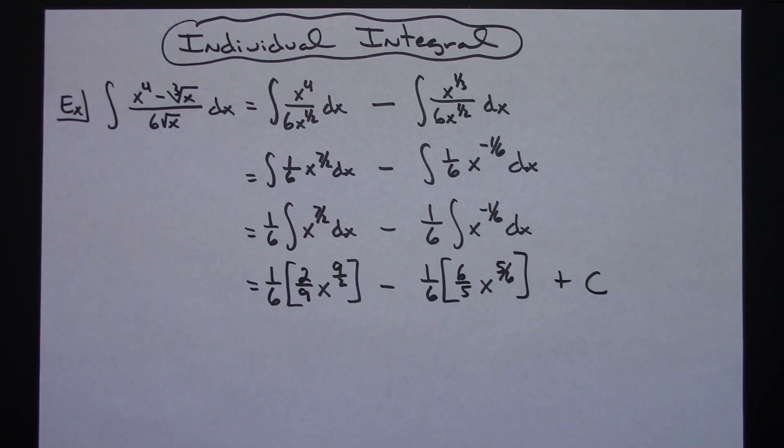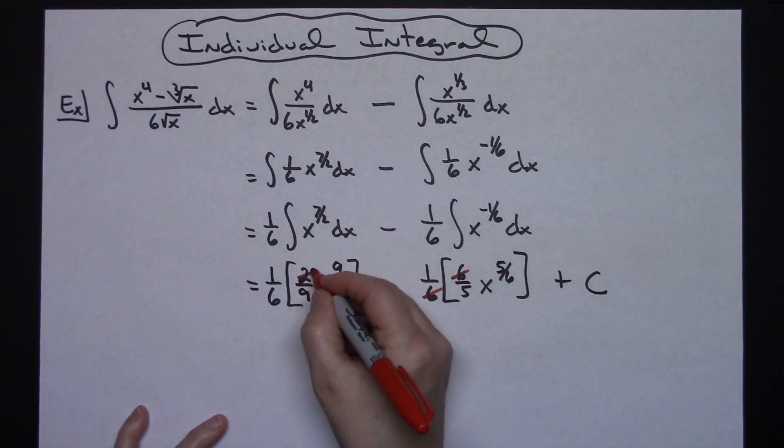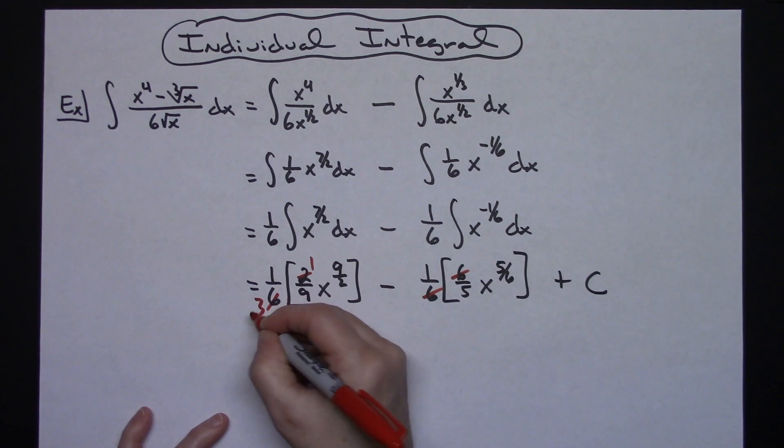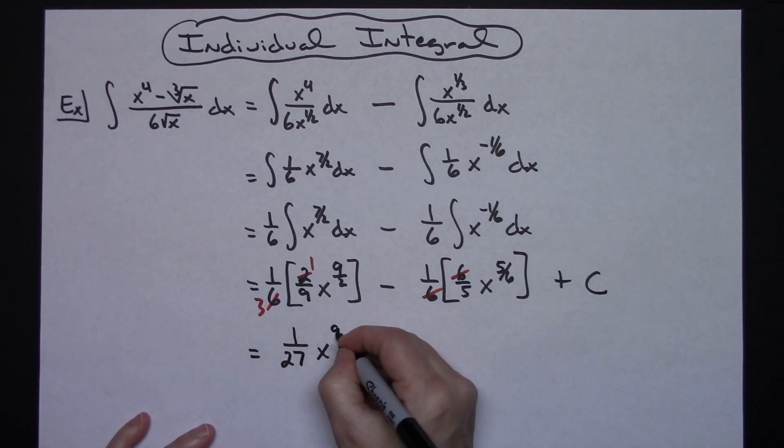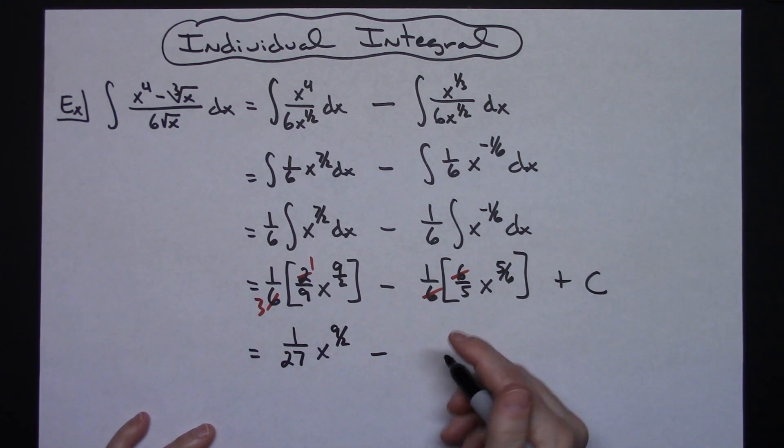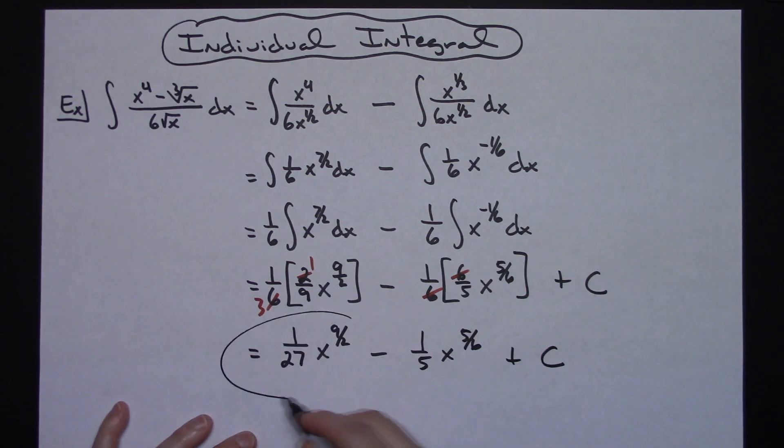If we do a little reducing here, I cross off this six and the six—two goes into two once, two goes into six three times, so I can reduce that. This will give me an overall term of one over twenty-seven x to the nine-halves. This one here will give me an overall one-fifth x raised to the five-sixths power, and then plus C.